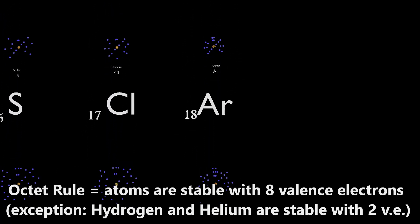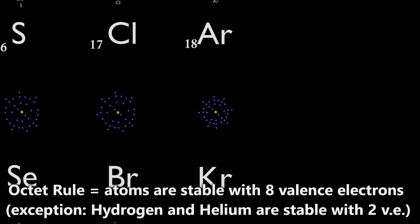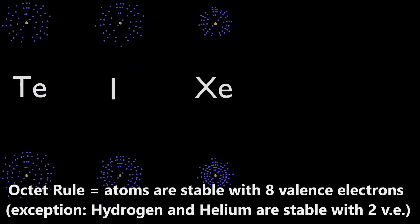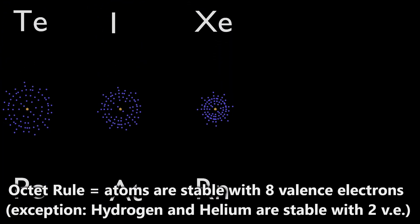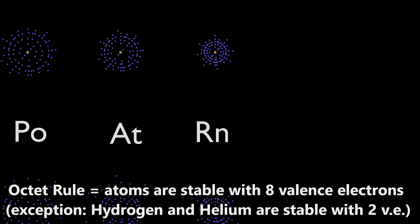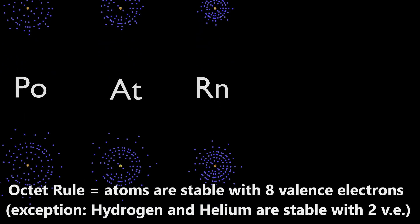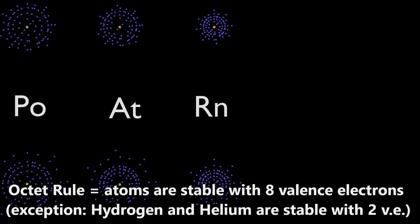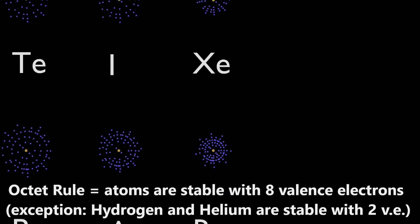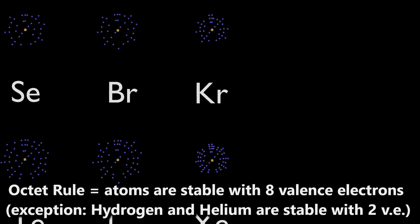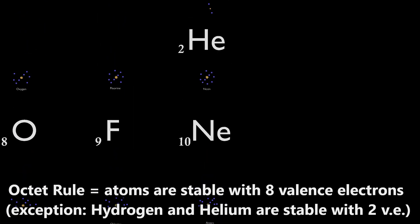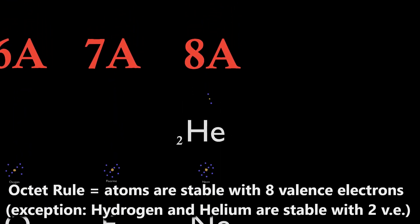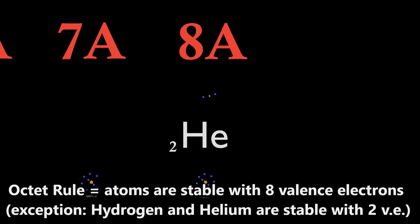All other atoms are going to gain electrons, lose electrons, or share electrons during bonding to achieve eight electrons in the valence shell. The exception to this rule is helium and hydrogen, which only have the first shell, and it is full with two electrons.